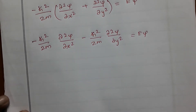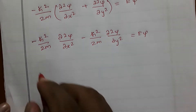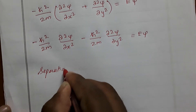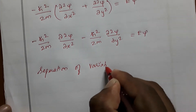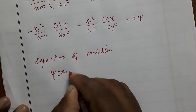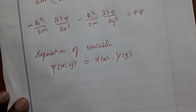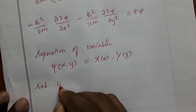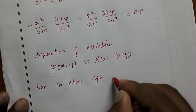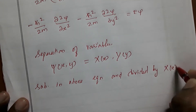We proceed with the separation of variables because two variables, x and y, are present. For the one-dimensional box this was not needed since only one variable was involved. Here we assume ψ(x,y) = X(x)·Y(y), substitute into the above equation, and divide by X(x)·Y(y).